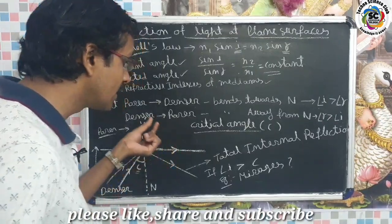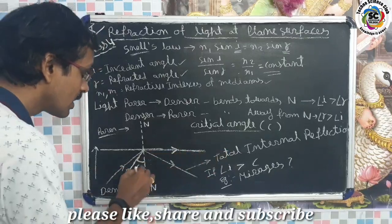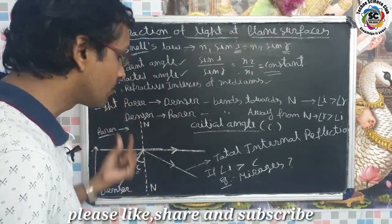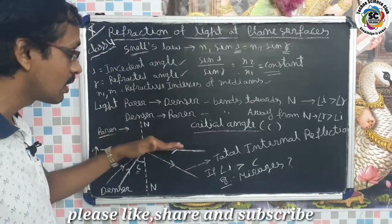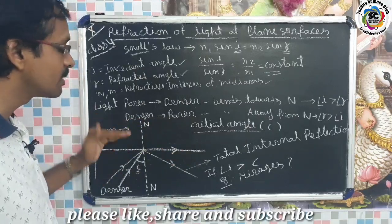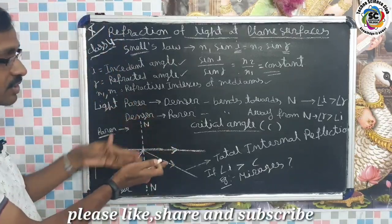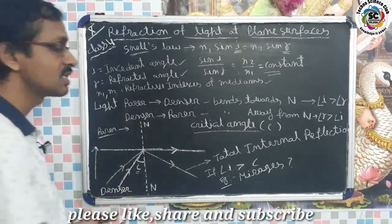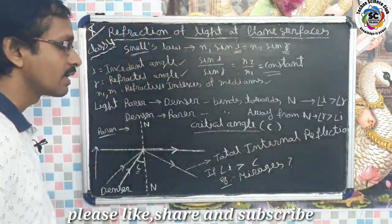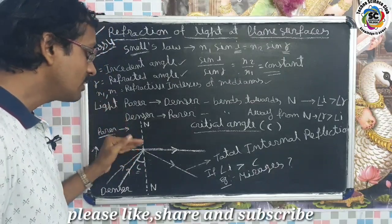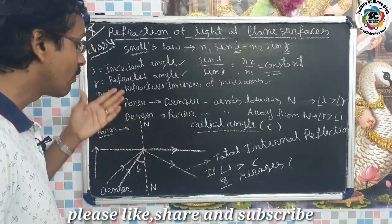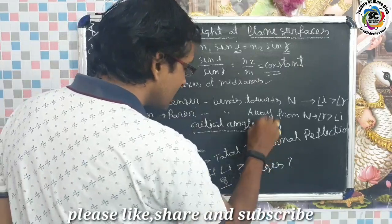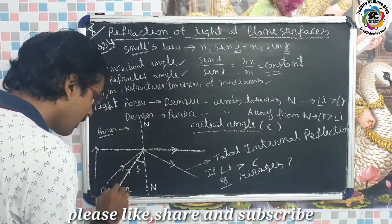Consider the situation where a light ray travels from the denser medium to the rarer medium. At a particular incident angle, the refracted ray passes exactly along the surface separating the two mediums — it becomes horizontal to the surface. The incident angle at which this happens is called the critical angle of that medium, denoted by the letter C.